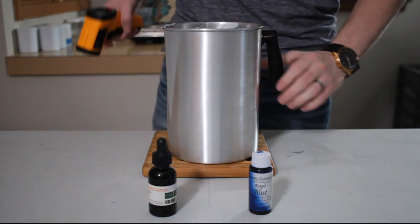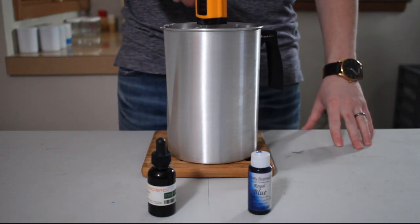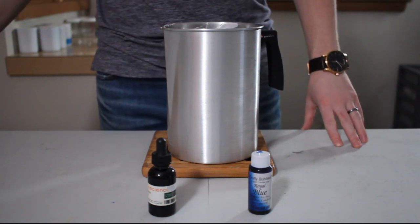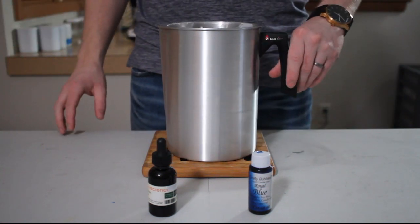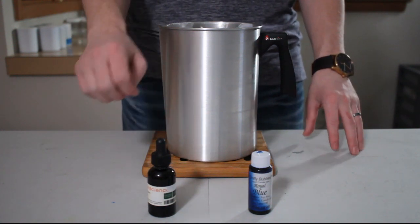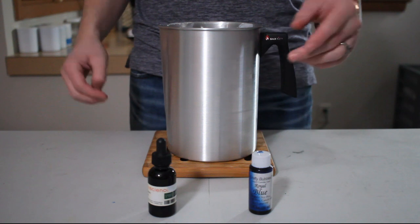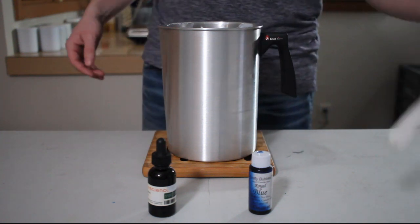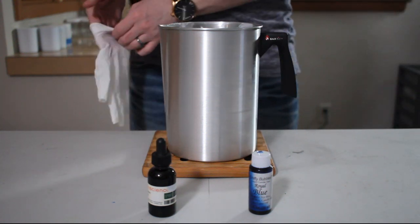Once our wax has reached 185 to 200 degrees Fahrenheit take it off the heat and we're going to add our color now before we add our fragrance oil. Since we have roughly half a pound of wax here we're going to use three drops of green and one drop of blue.